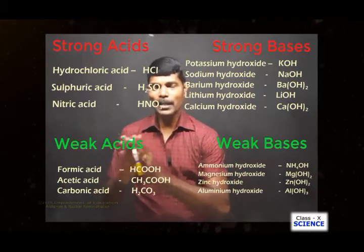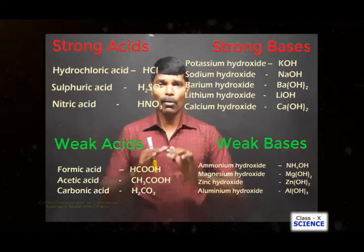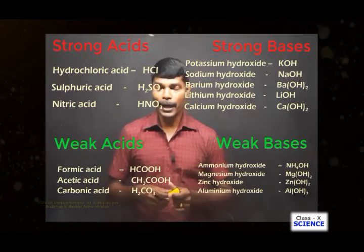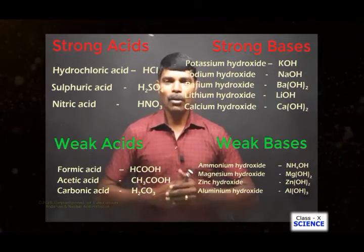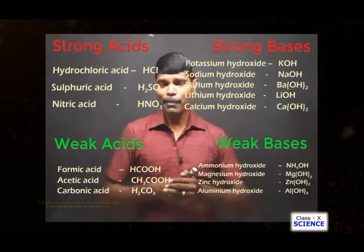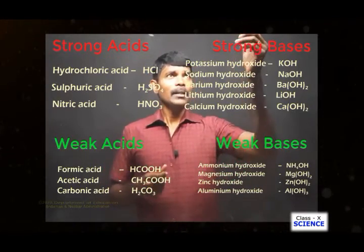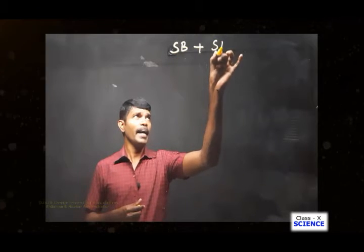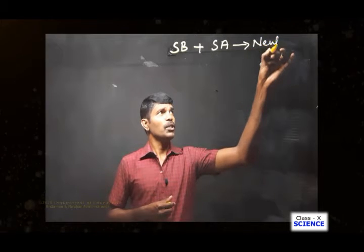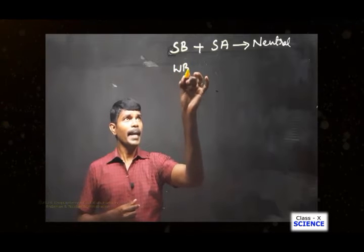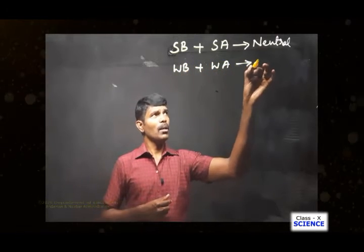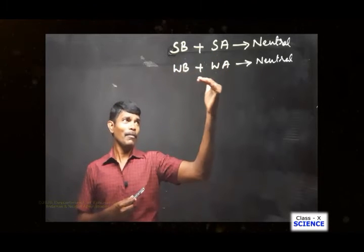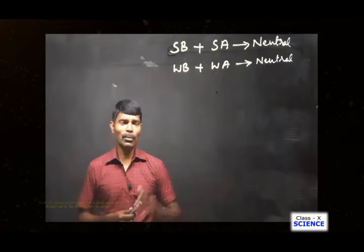Now you are clear about strong acids, strong bases, weak acids, and weak bases. On the basis of this knowledge, we can find the chemical nature of a salt. If a strong base reacts with a strong acid, the salt obtained will be neutral. Likewise, if a weak base reacts with a weak acid, the salt will also be neutral.